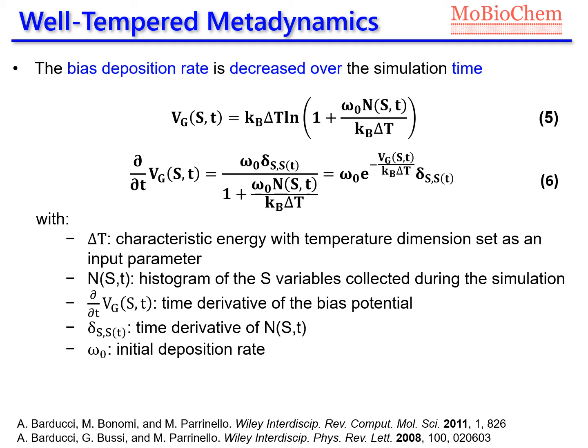Here, the time derivative of the bias potential has been rewritten by reshaping expression 5 and substituting the denominator of the fraction. Within this formulation, the bias potential does not converge exactly to the free energy.